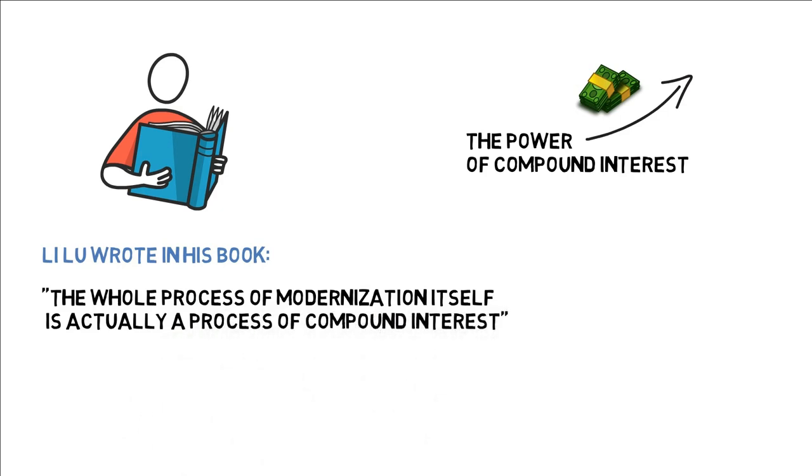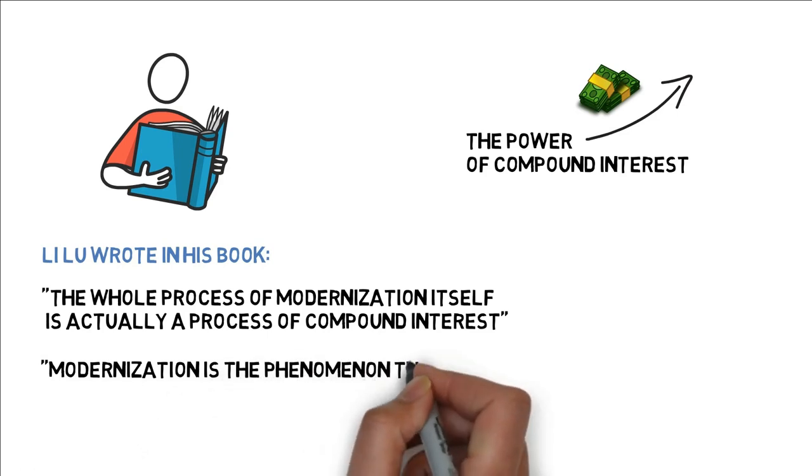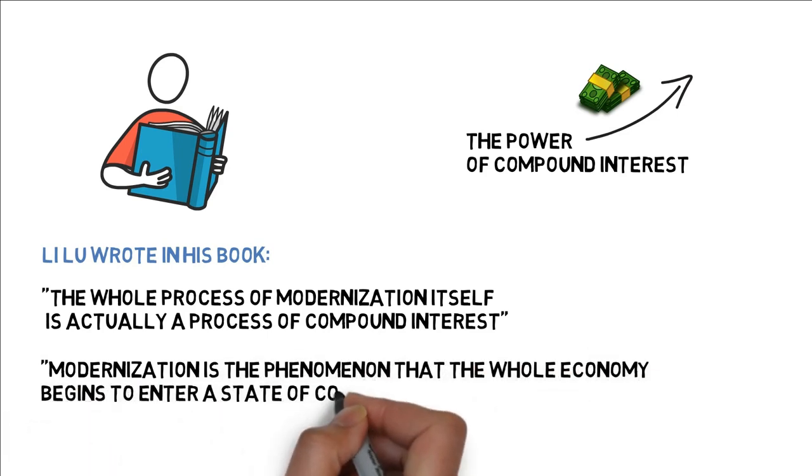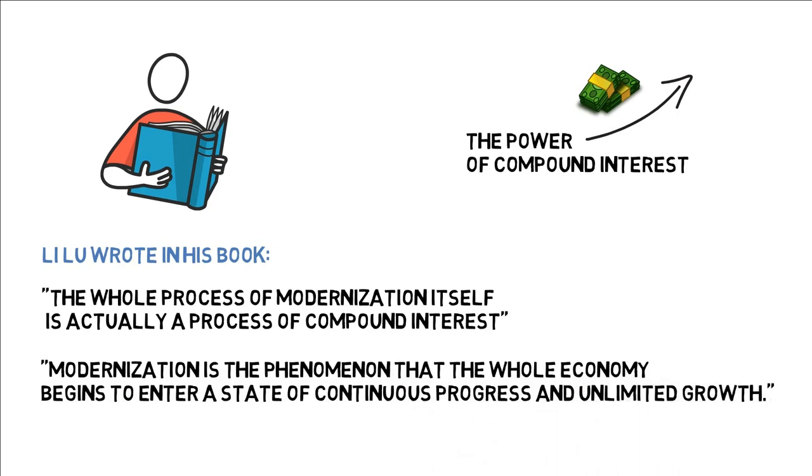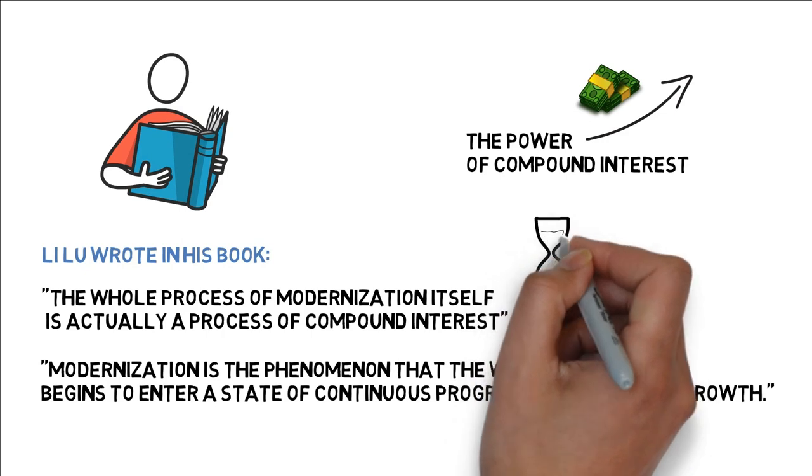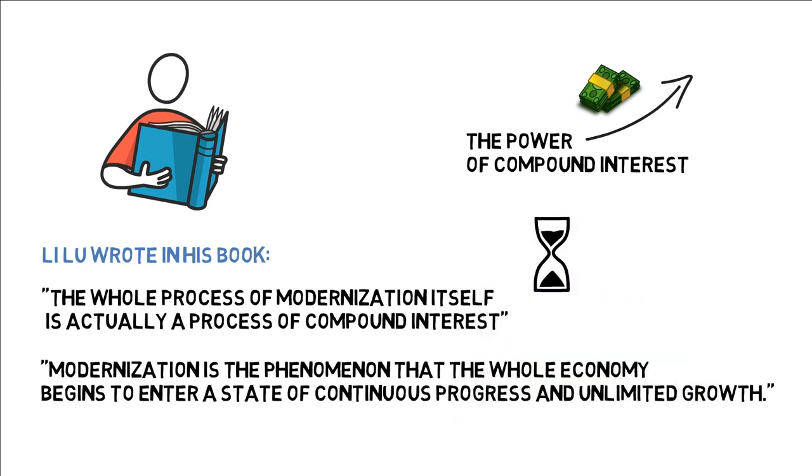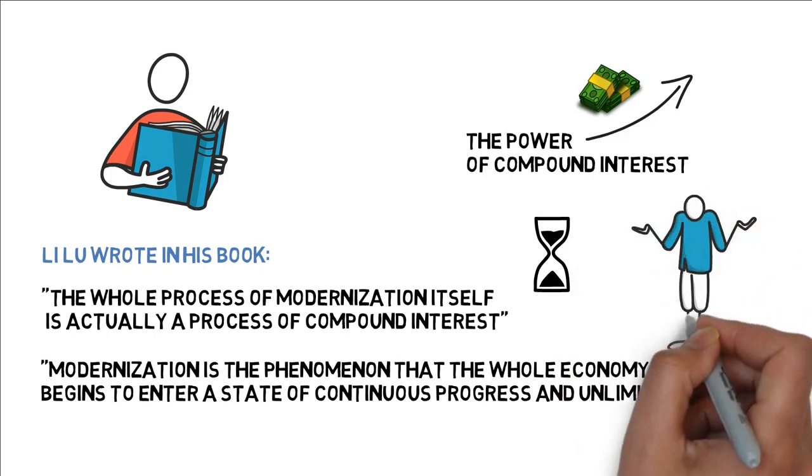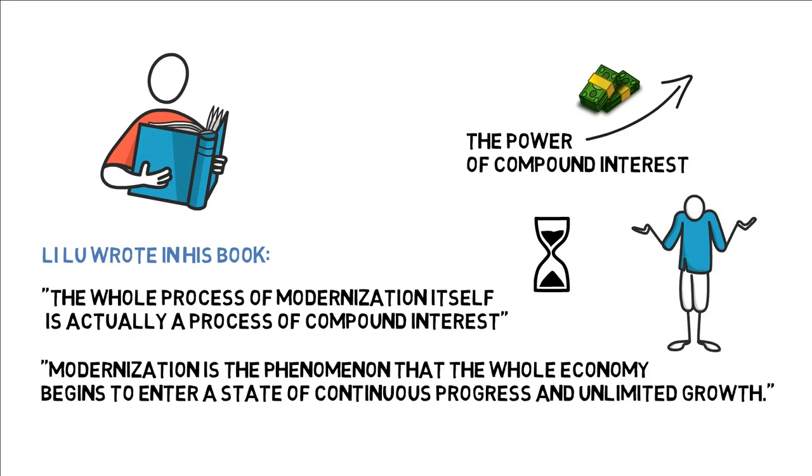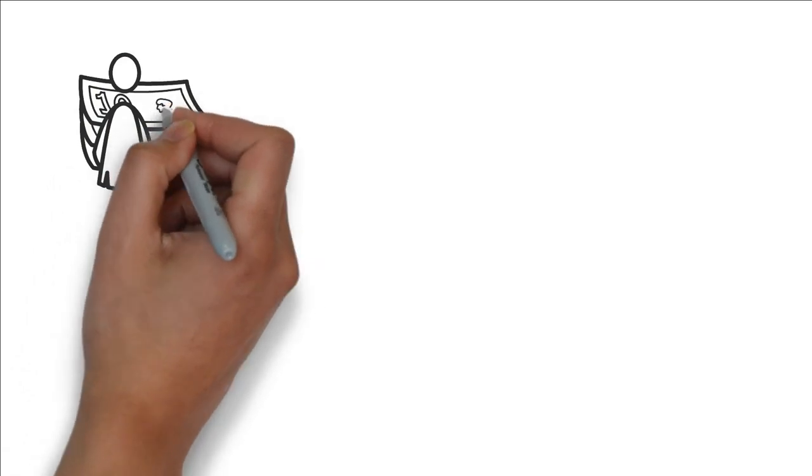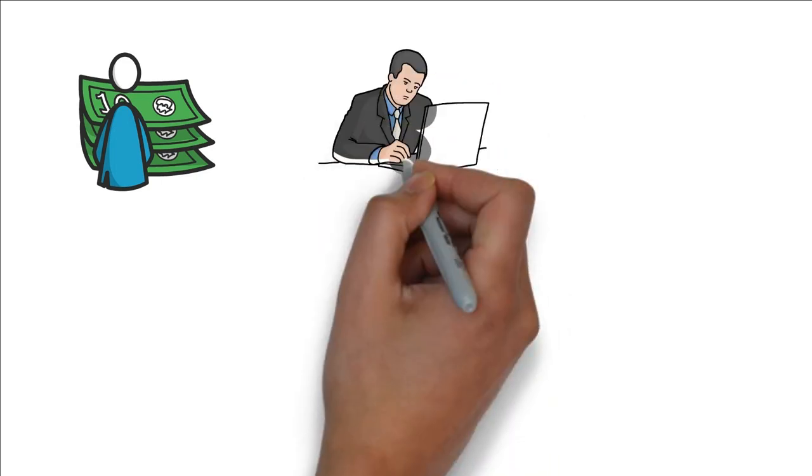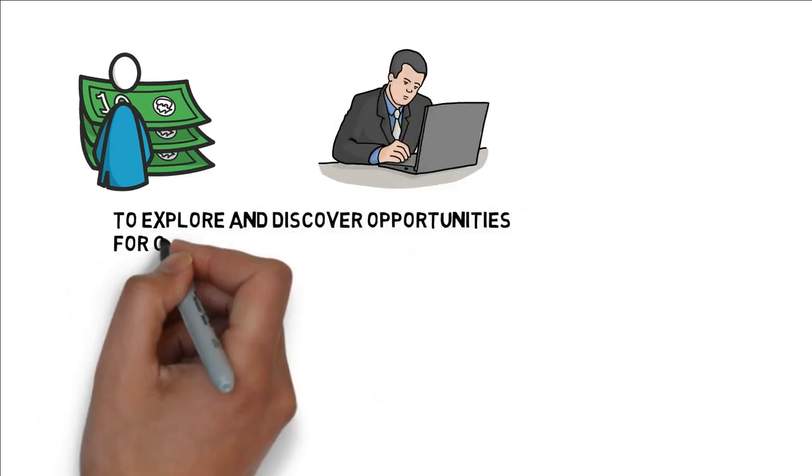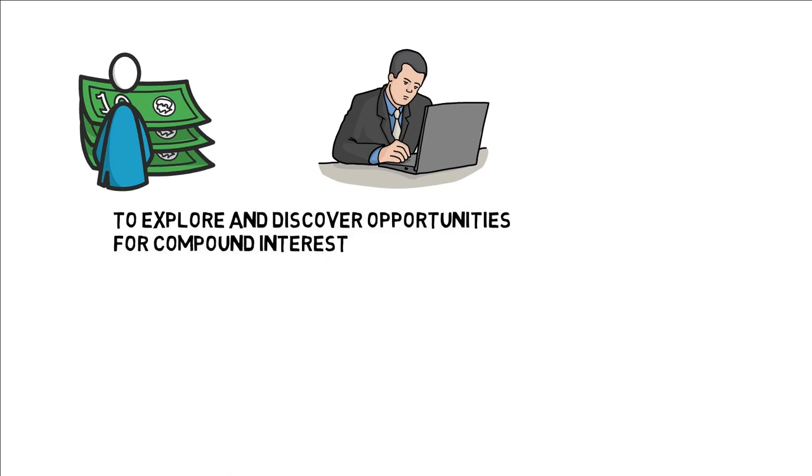As Li Lu wrote in his book, the whole process of modernization itself is actually a process of compound interest. According to his definition, modernization is the phenomenon that the whole economy begins to enter a stage of continuous progress and unlimited growth. He called it the law of modernization. It may take several decades until we can look back before we know whether this was right or not. Like Moore's law in the early years, observation can only lead to theories. Li Lu's investment style is closely related to this observation. The essence of value investing is to explore and discover opportunities for compound interest, which is only a product of the phenomenon of modernization.